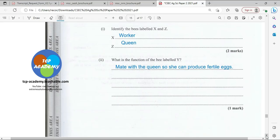What is the function of bee Y, the one in the middle? We said that was a drone, and the function of the drone is to mate with the queen so she can produce fertile eggs. It's important to know that the queen can produce eggs without mating with the drone; however, those eggs are usually infertile.